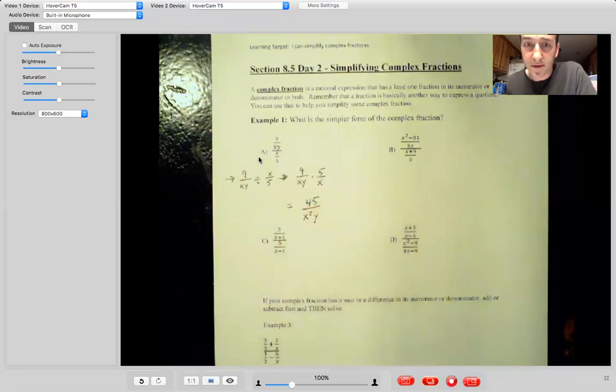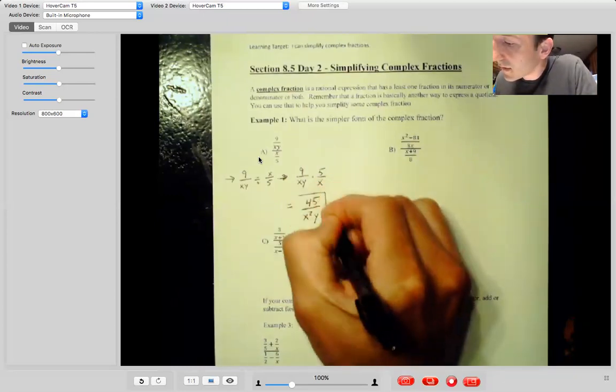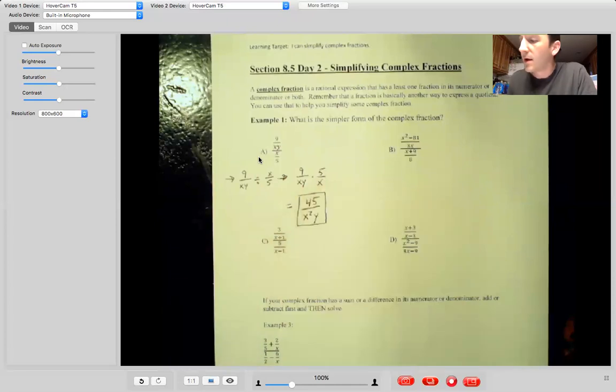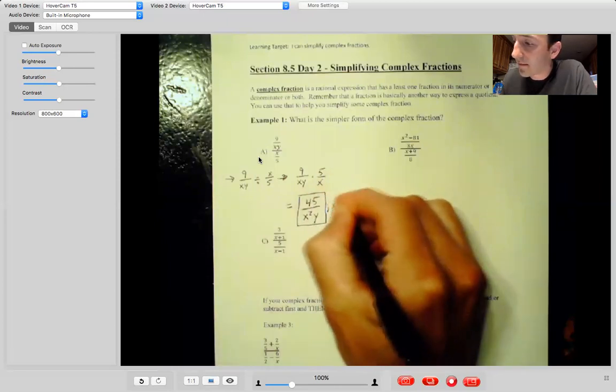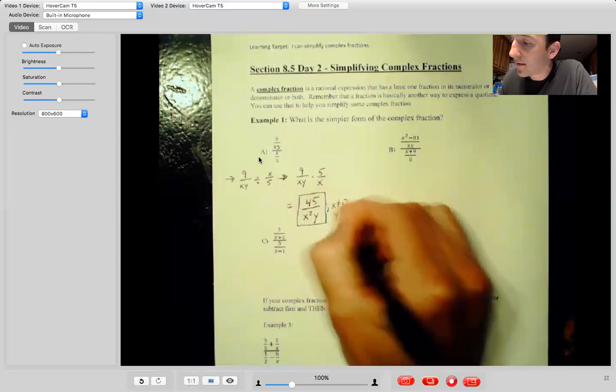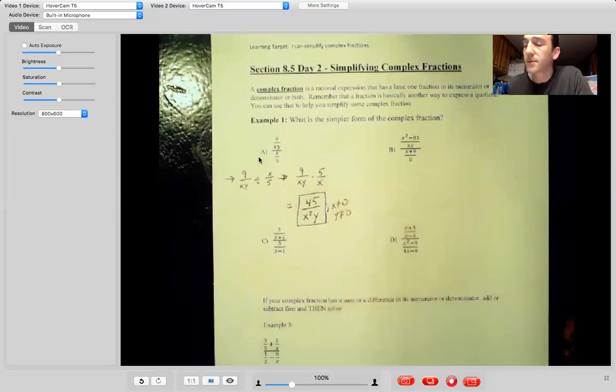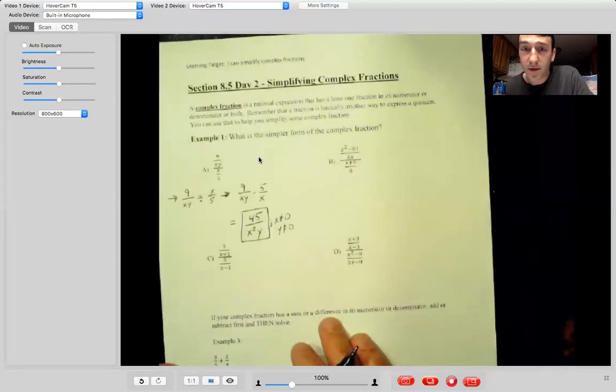And then on MathXL, your directions just say write in factored form. So they don't ask for the restrictions, but if they did on this one, we would just say X can't be zero, Y can't be zero. All right. So moving on to the next one.